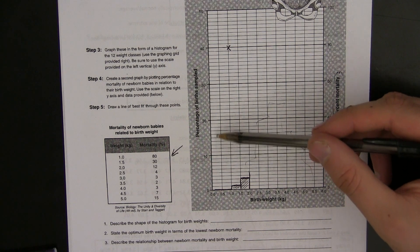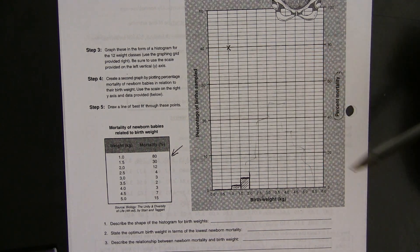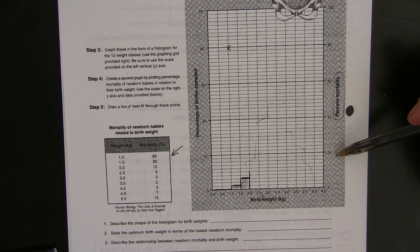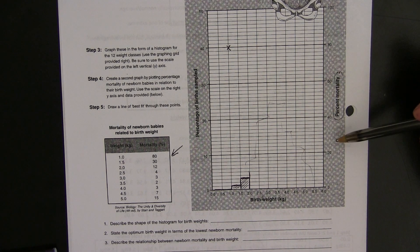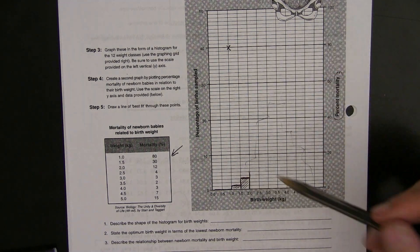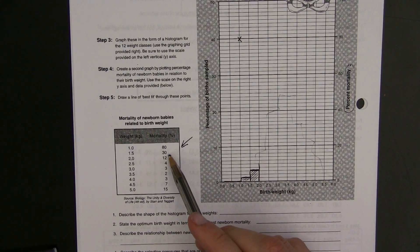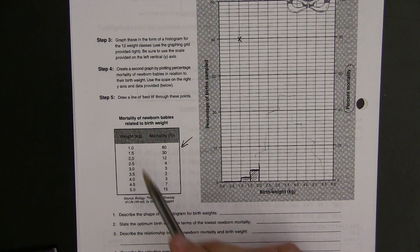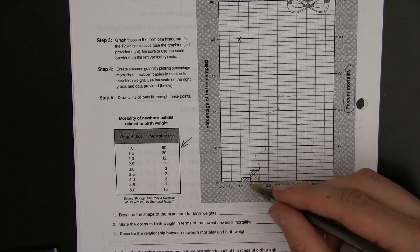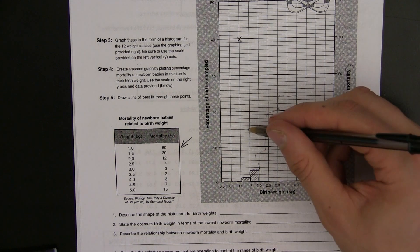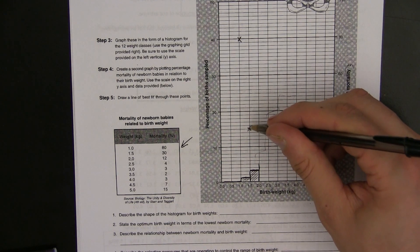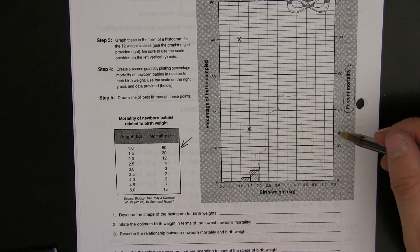Remember, for the other data set, for the bar chart, we're working off this side. For this new line graph that we're going to do, we work off this side. So, 80% mortality at one kilogram. Amazingly, this drops to 30% mortality. So many more of the babies live if the baby's weight is 1.5 kilograms. So, again, 1.5 kilograms, 30. I mark that point off using the x-axis here.